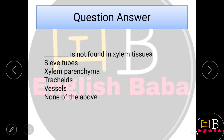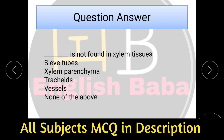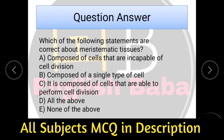Which of the following statements is correct about meristematic tissues? Option A: composed of cells that are incapable of cell division. Option B: composed of single type of cells. Option C: composed of cells that are able to perform cell division. Meristematic tissues are in division — they are a group of cells which perform cell division. So Option C is correct.